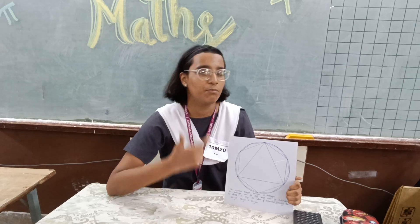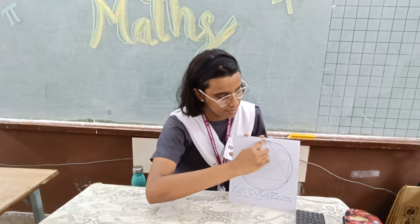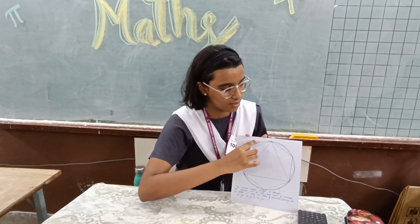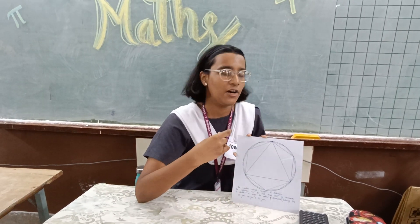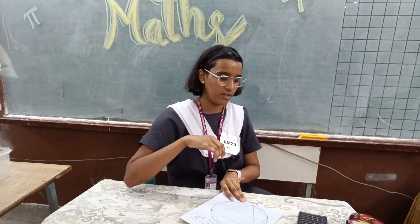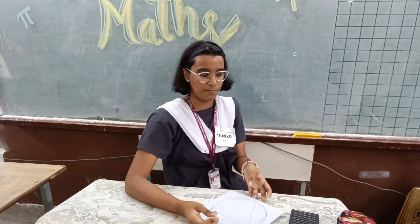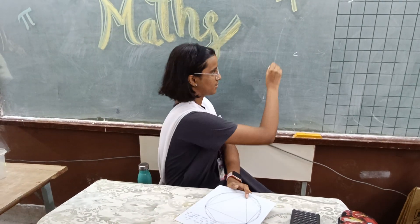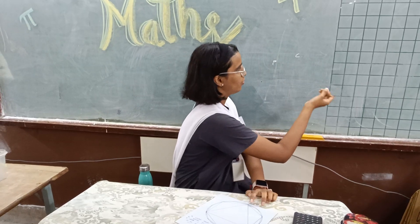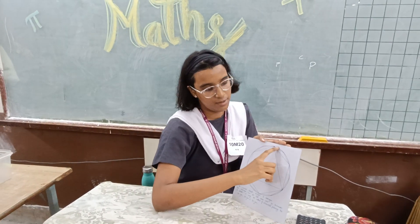Archimedes is generally credited as the one who improved this method. What he did was he inscribed a dodecagon first, then he circumscribed another dodecagon. So he found the perimeter of the circumscribed dodecagon and the perimeter of the inscribed dodecagon. Let me denote the circumference of the circle as C, the perimeter of the inner dodecagon, and the outer dodecagon. It is very evident that the perimeter of the circumscribed dodecagon is greater.